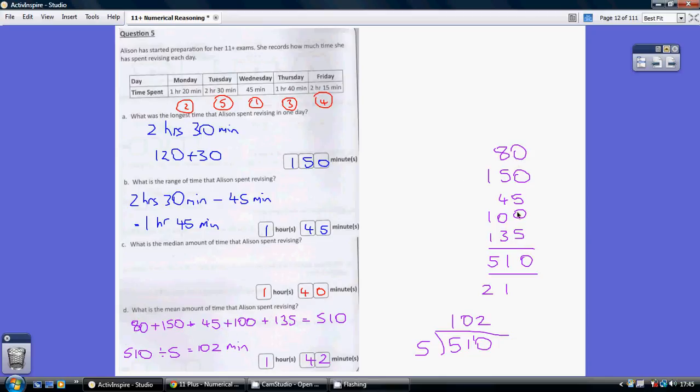There's no shortcut - just put them in nice column form, be very careful to have them all above each other. Work your way from right to left: 5 and 5 is 10, so 0 carry 1; 8 and 5 and 4 and 3 and the carried 1 is 21, so 1 carry the 2; and then 1, 2, 3, 4, 5. So 510 minutes - that's the total amount of time.